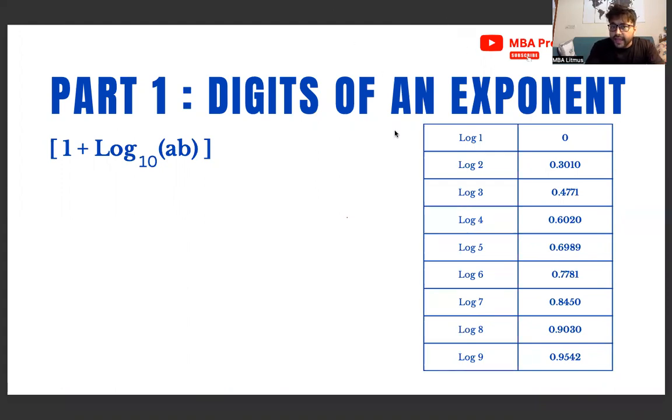If I have to calculate the digits of a^b - this can be anything, like 27^6 or 16^8 - how many digits are in these numbers? The formula is very simple: [1 + Log₁₀(ab)], where the brackets represent the greatest integer function. What does the greatest integer function do? It rounds a number to the greatest integer less than or equal to that number. For example, [3.2] = 3.